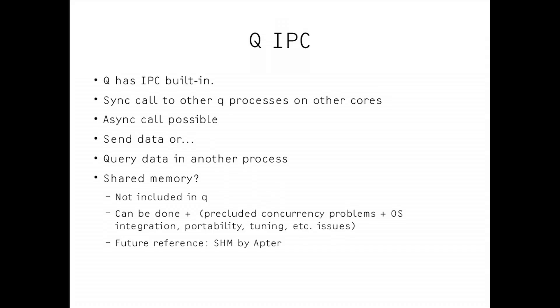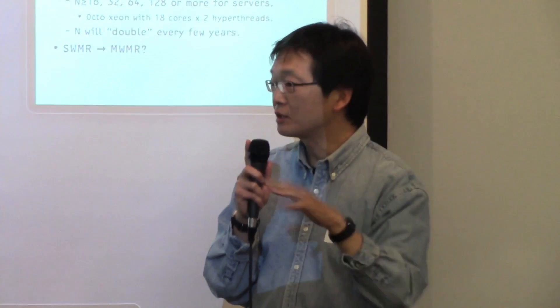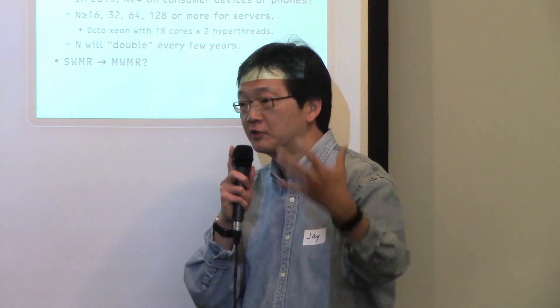You start another process somewhere else, either on your machine or another machine, and you talk to that process. You can talk in two different modes: synchronous, where you make the call and wait for the reply, or asynchronous, where you send code to the other side and check the result later when you see fit.